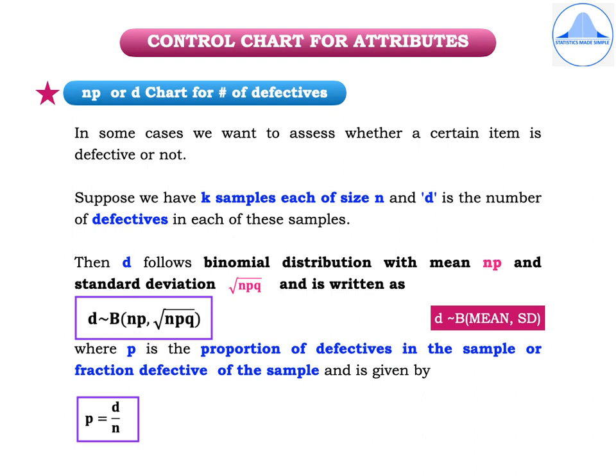In some cases we want to assess whether a certain item is defective or not. Suppose we have K samples each of size N and D is the number of defectives in each of these samples. Then D follows binomial distribution with mean NP and standard deviation root NPQ, where P is the proportion of defectives in the sample and is given by P equals D divided by N.